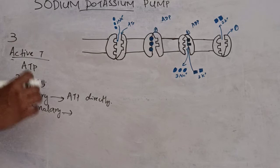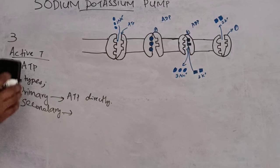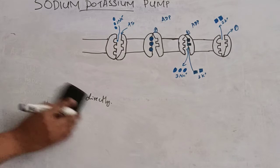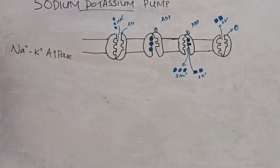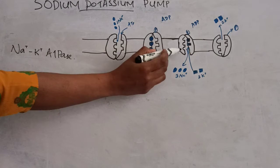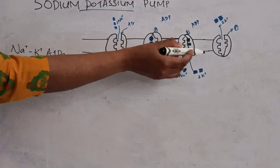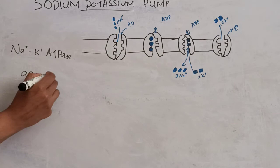One of the common examples of active transport is the sodium-potassium pump, also known as sodium-potassium ATPase. Its main function is to pump sodium out of the cell in exchange for potassium into the cell, against the concentration gradient.